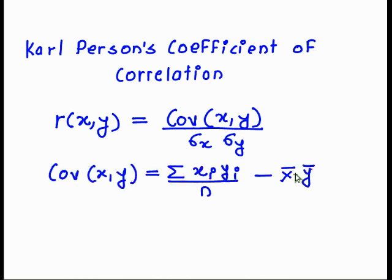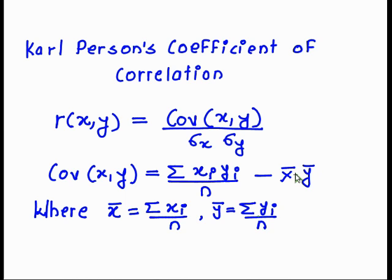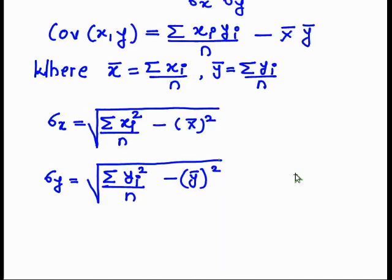The covariance of x, y is equal to summation of xi times yi upon n, minus x̄ times ȳ, where x̄ and ȳ are the means of x and y. x̄ is equal to summation of xi upon n, and ȳ is equal to summation of yi upon n. Sigma x is the square root of summation of xi squared upon n minus x̄ squared, and sigma y is the square root of summation of yi squared upon n minus ȳ squared.